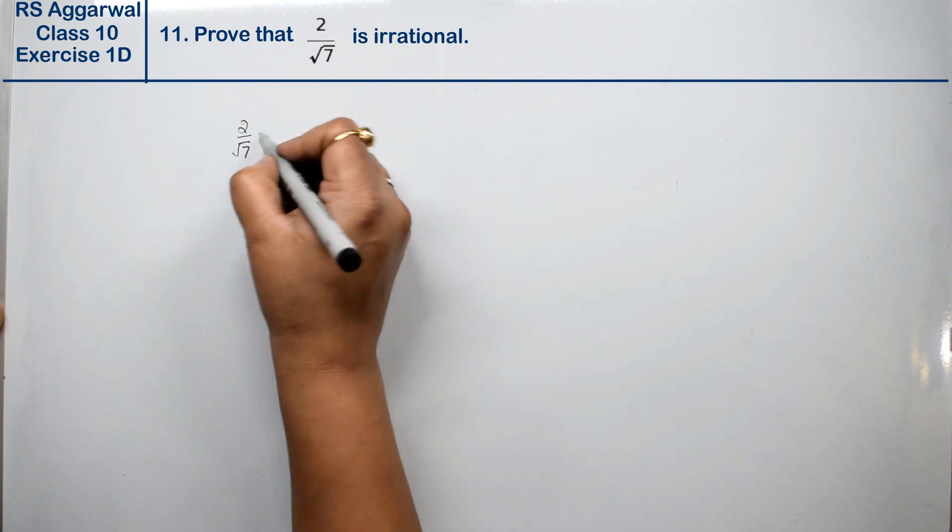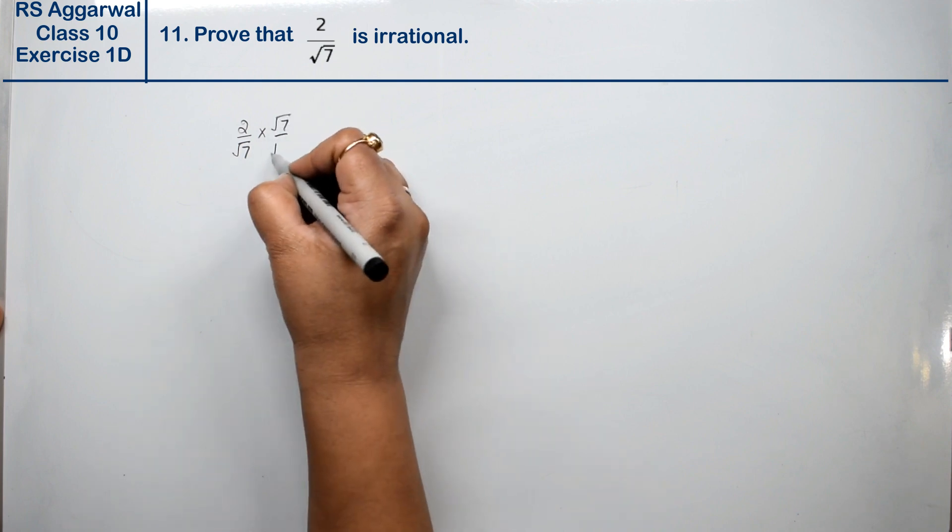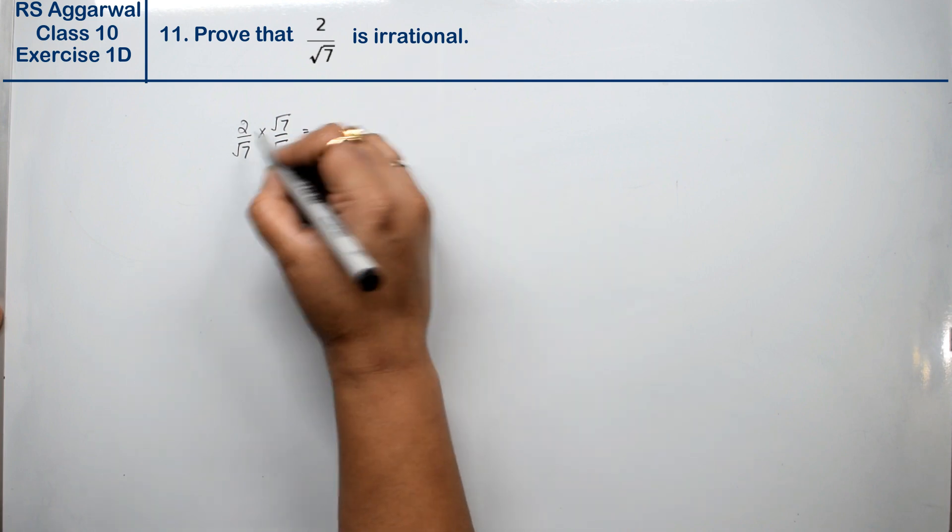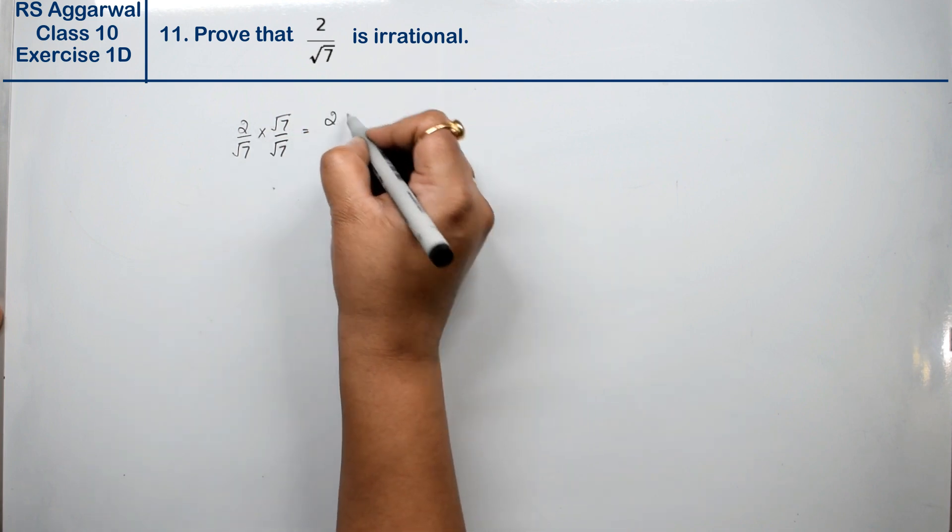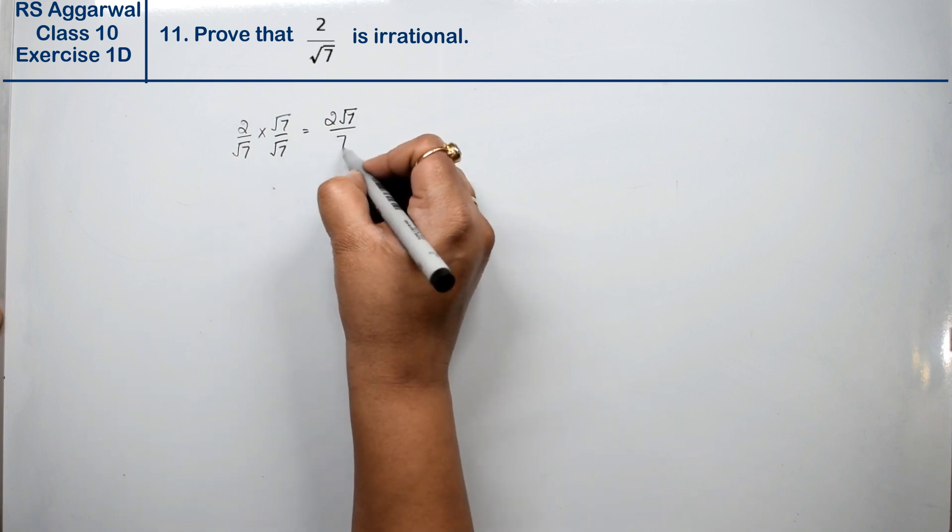When the root is under the denominator, we multiply and divide by the same value, as we learned in class 9. So, 2 into root 7 is 2 root 7, and root 7 into root 7 is 7.